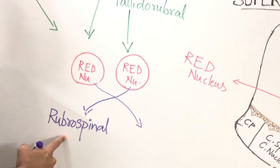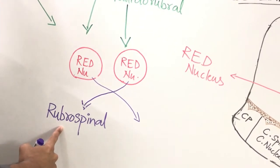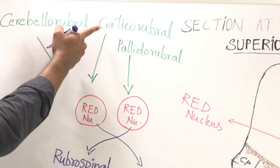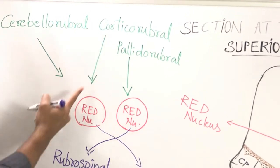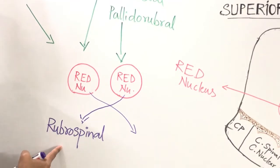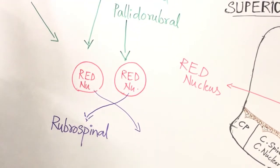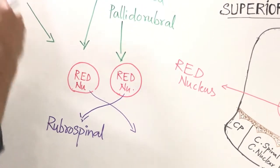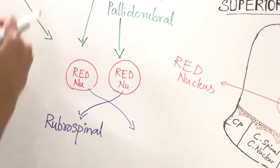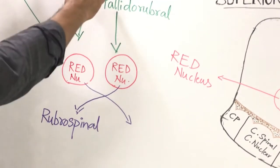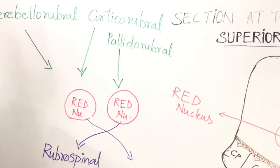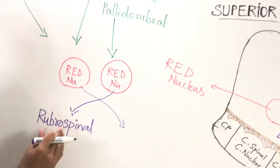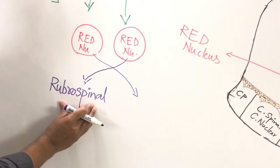The rubrospinal pathway is an indirect, alternative pathway to the pyramidal tract. In the pyramidal tract (corticospinal), fibers go directly from the motor cortex to the anterior horn of the spinal cord, whereas here the pathway goes from the motor cortex to the red nucleus and then to the spinal cord — acting as an alternative pathway for the pyramidal tract.